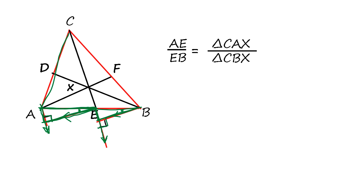That means this ratio AE to EB is the same as the area of triangle CAX to the area of triangle CBX. Because two triangles share the same bottom and the height is the ratio, this ratio is the ratio of the area CAX and CBX.